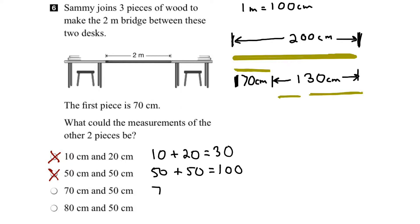Okay, let's try 70 centimeters and 50 centimeters. Well, if we add those two together, we'd get 120 centimeters. And again, that's not what we need. We need 130. So this option is incorrect.